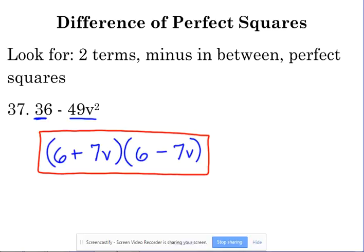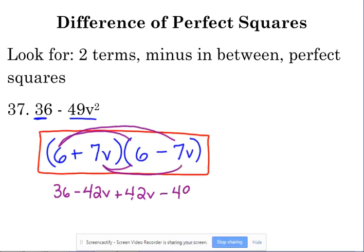But it works out, because 6 times 6 is 36, the outside gives us negative 42V, 6 times negative 7, the inside gives us positive 42V, and the last gives us negative 49V squared.